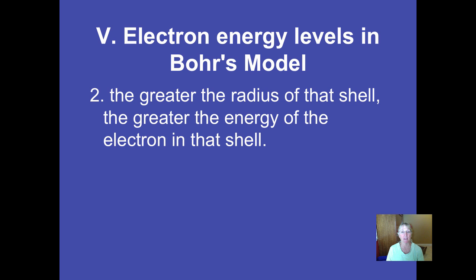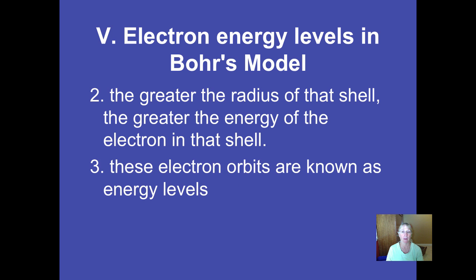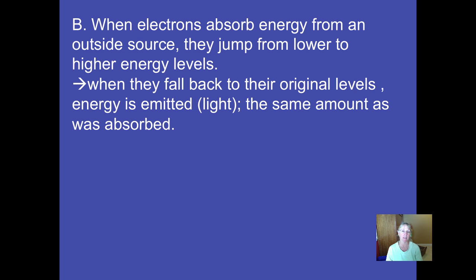The greater the radius of that shell, the farther out from the center of the atom the electron was in that energy level or shell, and the greater energy it would have had. We learned earlier we could calculate the energy of these electrons if we know Planck's constant and the frequency. These electron orbits were called energy levels, and to some extent they still hold true today.